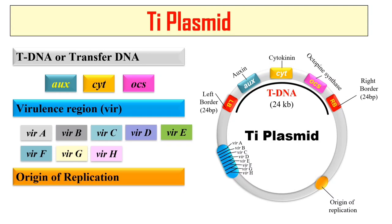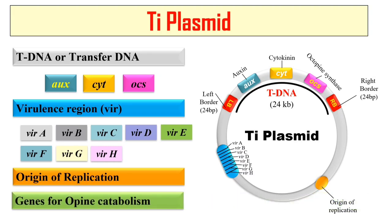The next element of this Ti plasmid is the origin of replication, which is required for the replication of the Ti plasmid so that it can make many copies of itself and ultimately cause the disease.